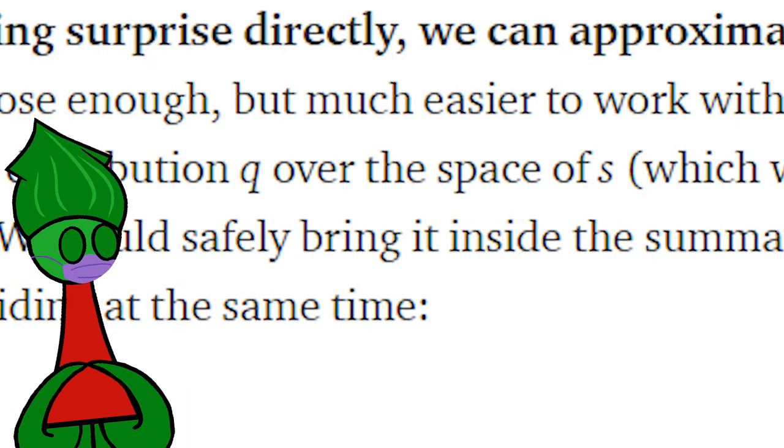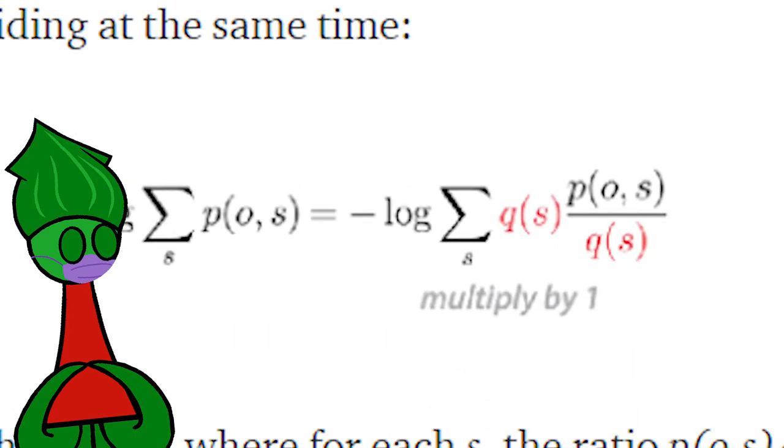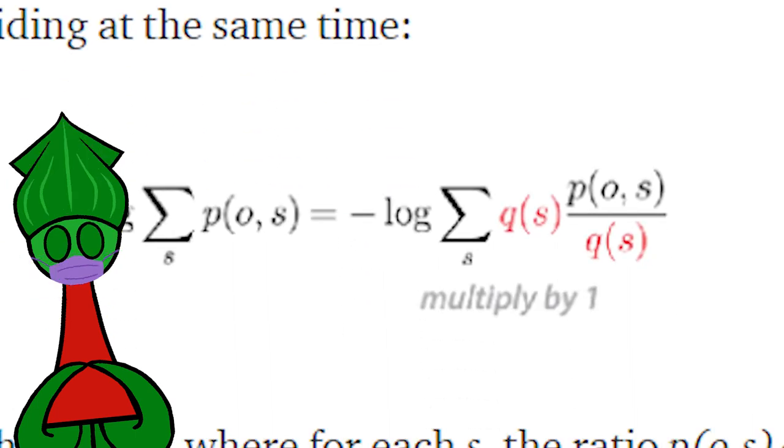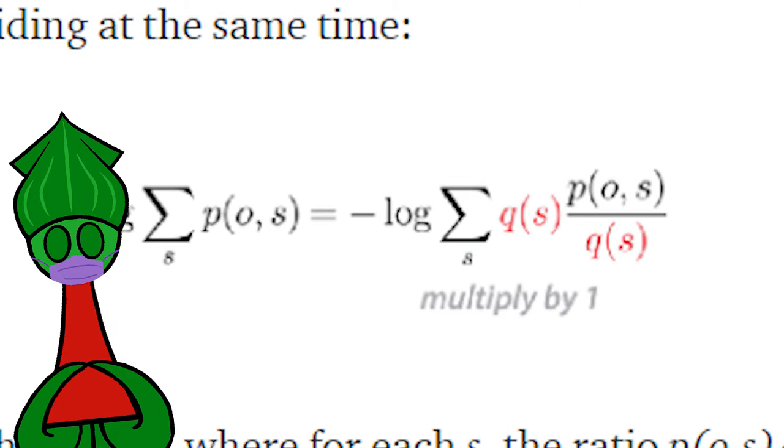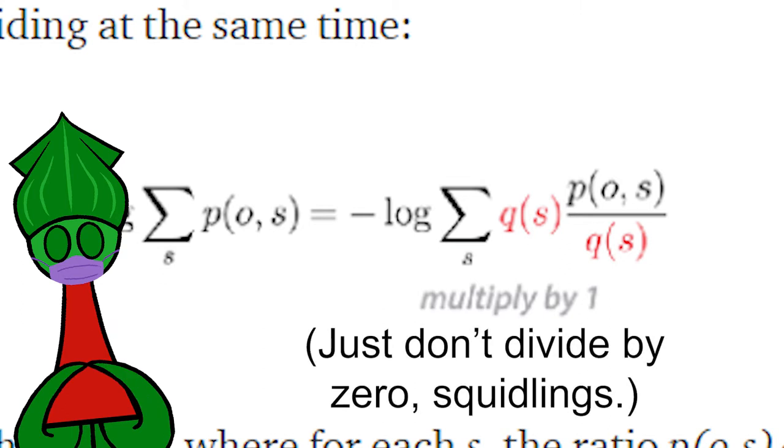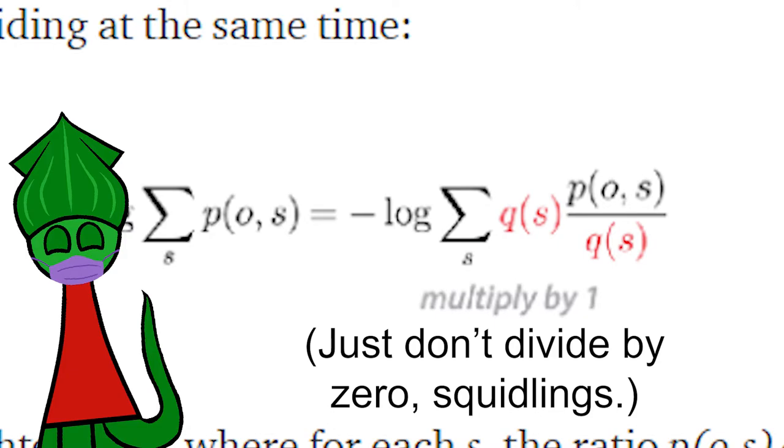We also multiply by q of s divided by q of s. Whatever q of s is, q of s divided by q of s is 1. And multiplying by 1 is a perfectly fine thing to do.